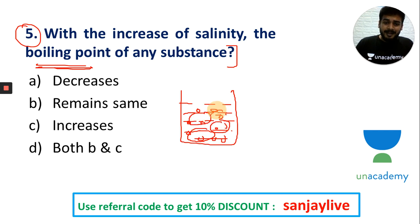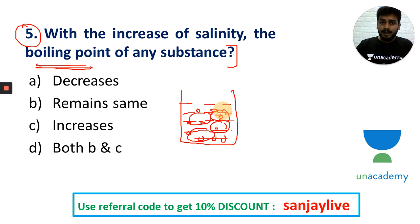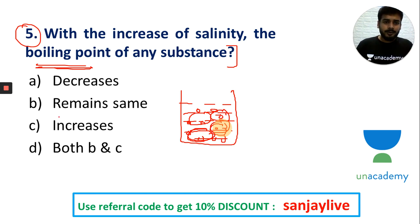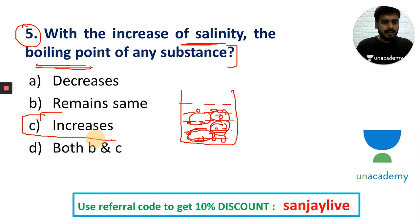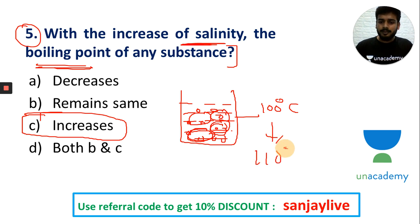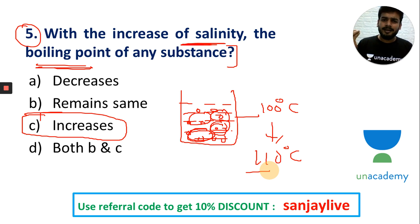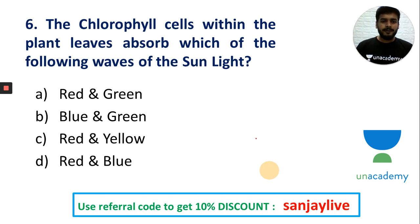As salinity increases, the boiling point increases. This is a key point to discuss. When salinity increases, the boiling point goes above 100 degrees. This is a basic concept to understand.